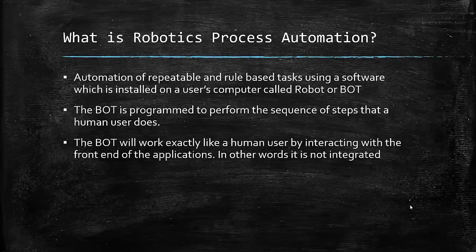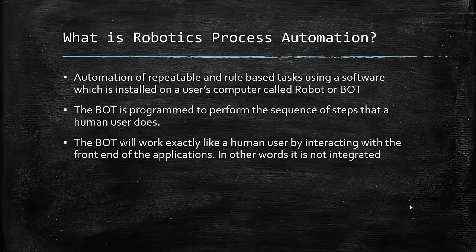RPA refers to the automation of repeatable and rule-based tasks using software which is installed on a user's computer, called a robot or simply a bot. The bot is programmed to perform the sequence of steps that a human user does, and it is all done on the front end of the application just like a human user would do, unlike traditional automation solutions where coding is done in the backend.